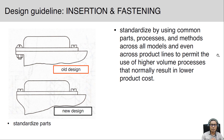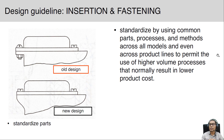The next guideline is standardized parts. Standardize by using common parts, processes, and methods across all models and even across product lines, to permit the use of higher-volume processes that normally result in lower product costs. Common parts such as screws, bolts, and nuts are used across different products in a company. This reduces product costs and enables better management of all parts, encouraging designers to use common parts.